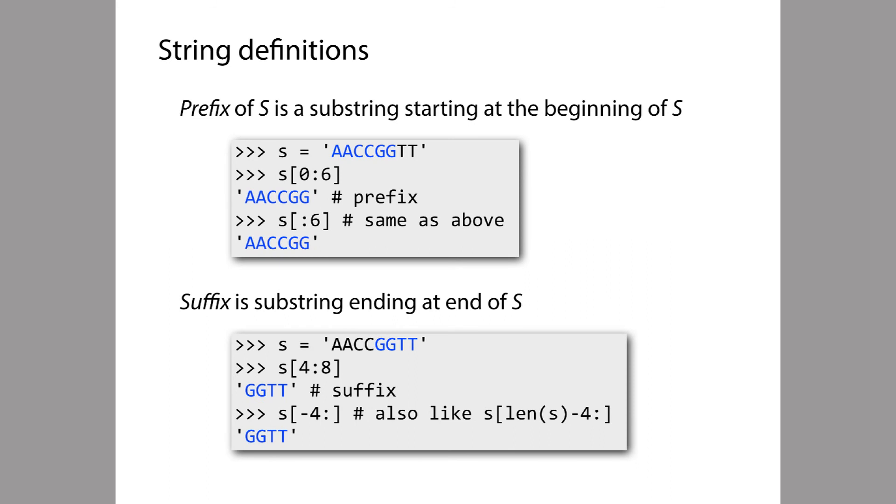A suffix is a substring that ends at the end of the longer string. For example, if this is our string S and we take the substring from offset 4 up to, but not including, offset 8, we get the string GGTT, which is a suffix, as you can see here.